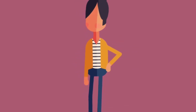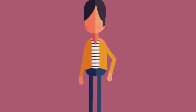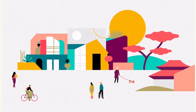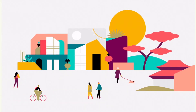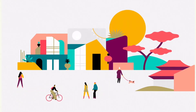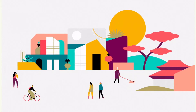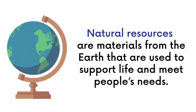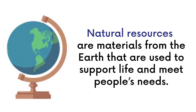Humans, just like any other species, have needs. We are not capable of surviving without our basic needs. Every individual needs to eat, to wear clothes, and to be sheltered. All the things we need to survive, such as food, water, air, and shelter, come from natural resources. Natural resources are materials from the Earth that are used to support life and meet people's needs. Any natural substance that humans use can be considered a natural resource. Natural resources are used to make food, fuel, and raw materials for the production of goods.